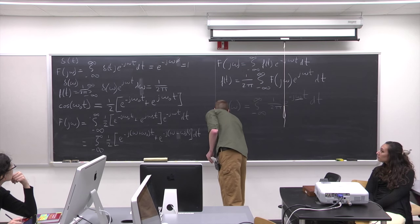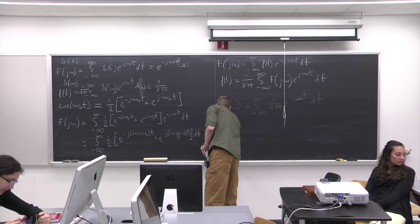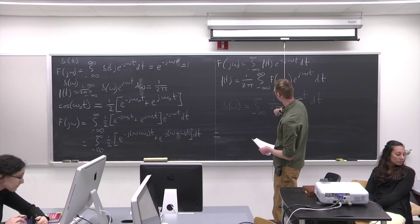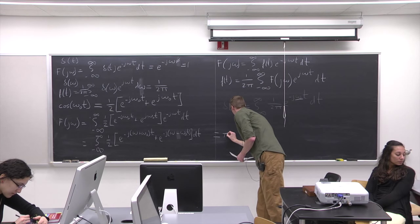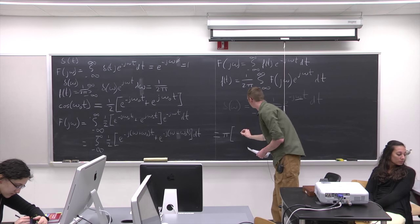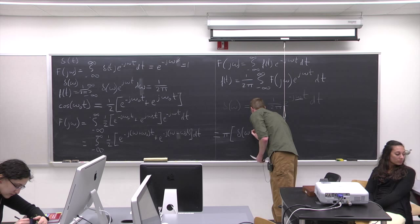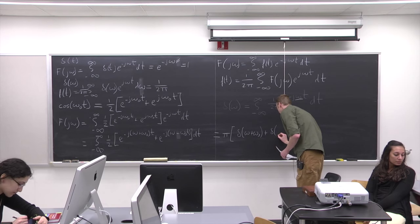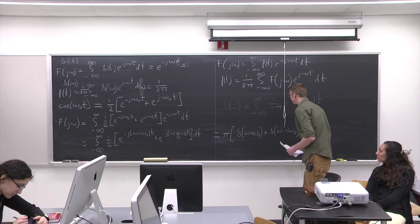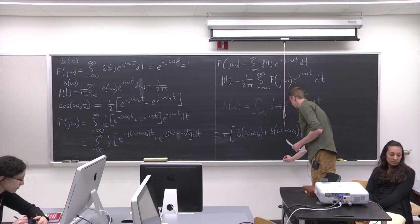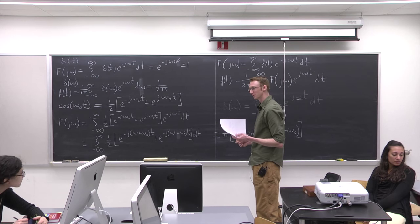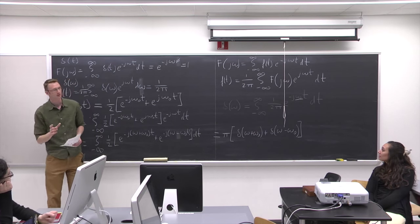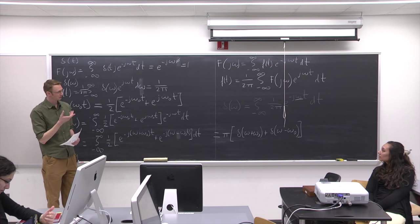So what that means is we're going to have π times the delta of ω plus ω₀ and the other term with ω minus ω₀. We started with a cosine in the time domain and ended up with the sum of two delta functions in the frequency domain.